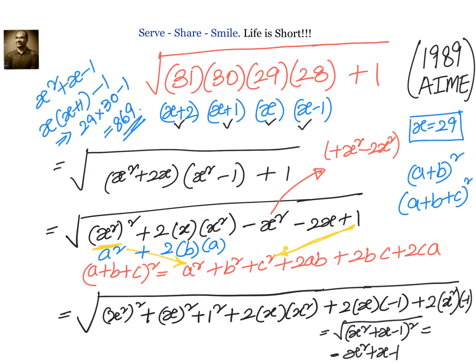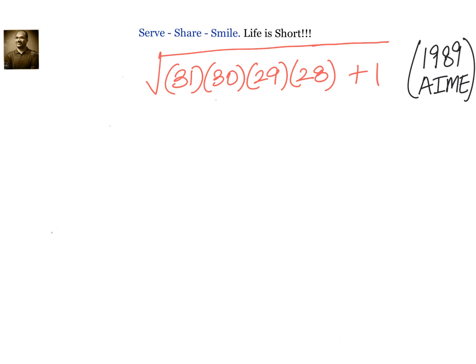The second method uses a problem-solving strategy: whenever a complex problem is given, try simple numbers first and see if there is a particular pattern. If you can identify that pattern, it becomes much easier to solve the original problem.